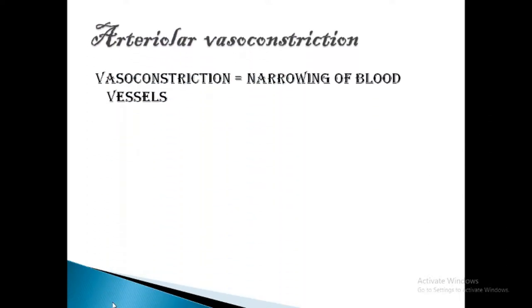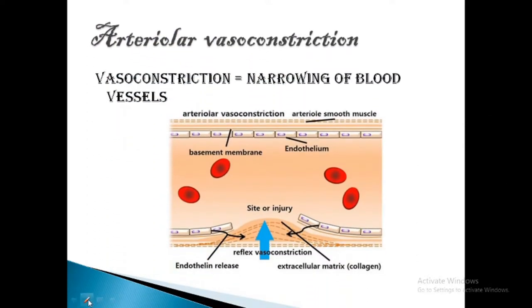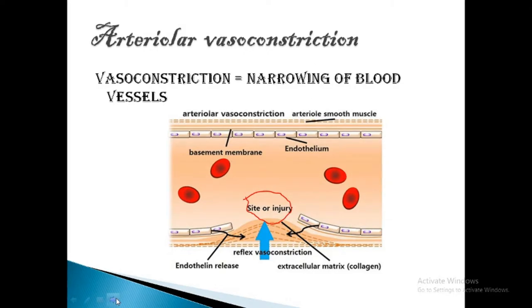Now let's come to arterial vasoconstriction. Vasoconstriction means the narrowing of the blood vessels, as shown in the figure here. It occurs immediately and reduces the blood flow to the injured area. It is mediated by a neurogenic mechanism and augmented by the local secretion of factors such as endothelin, which is an endothelium-derived vasoconstrictor.